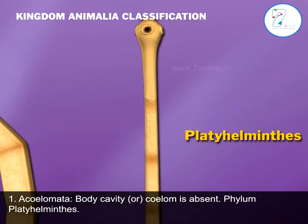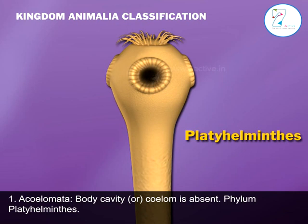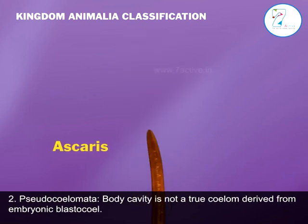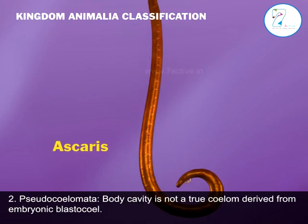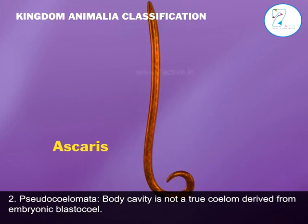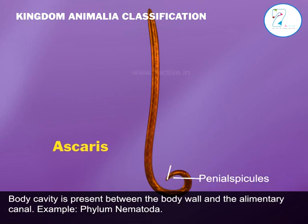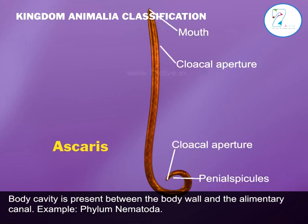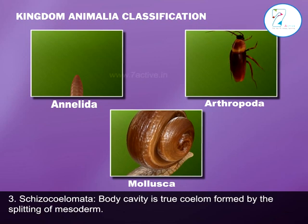1. Acoelomata: Body cavity or coelom is absent. Example: Phylum Platyhelminthes. 2. Pseudocoelomata: Body cavity is not a true coelom; it is derived from the embryonic blastocoel. The body cavity is present between the body wall and the alimentary canal. Example: Phylum Nematoda.